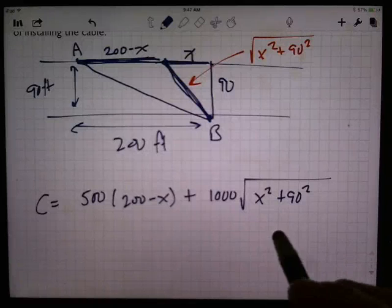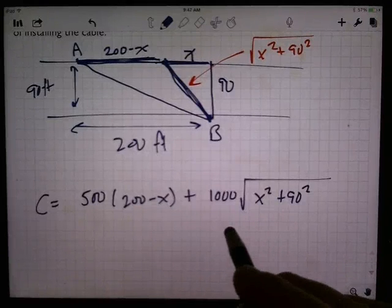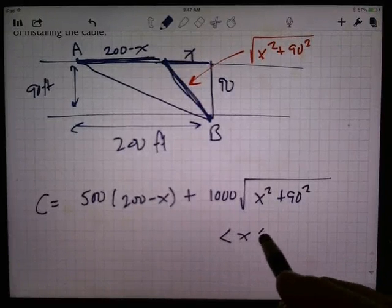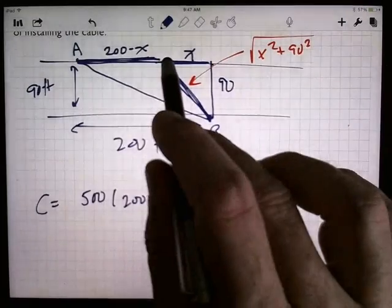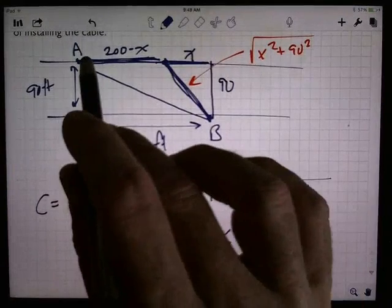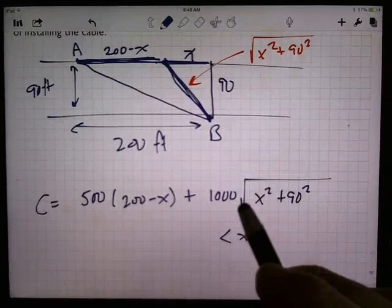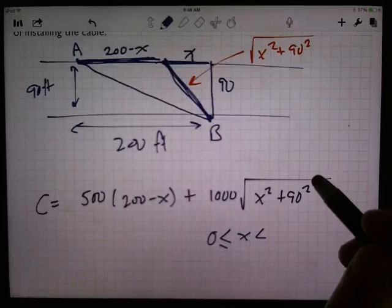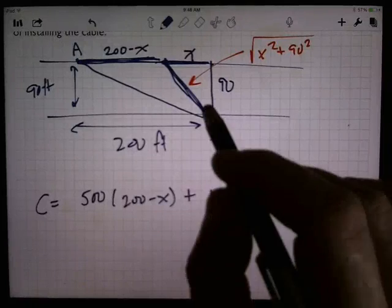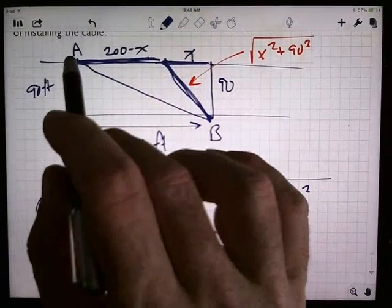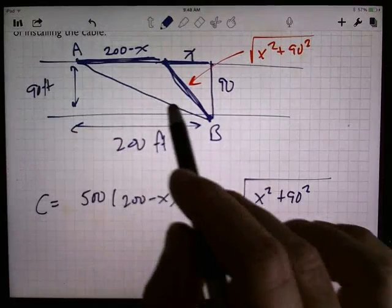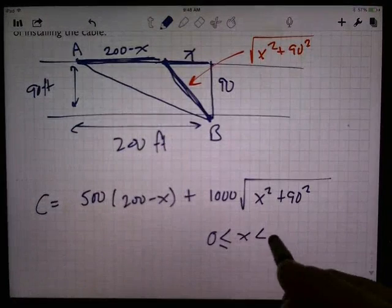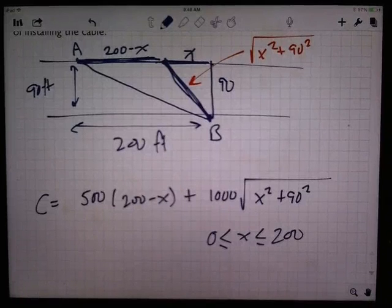Are there any conditions on X? Well, certainly it wouldn't make much sense to go past this and then come back this way. So let's say X is at least 0. And at most, X would be, it really doesn't make sense to come out this way and then come over. So it looks like X is probably no more than 200.